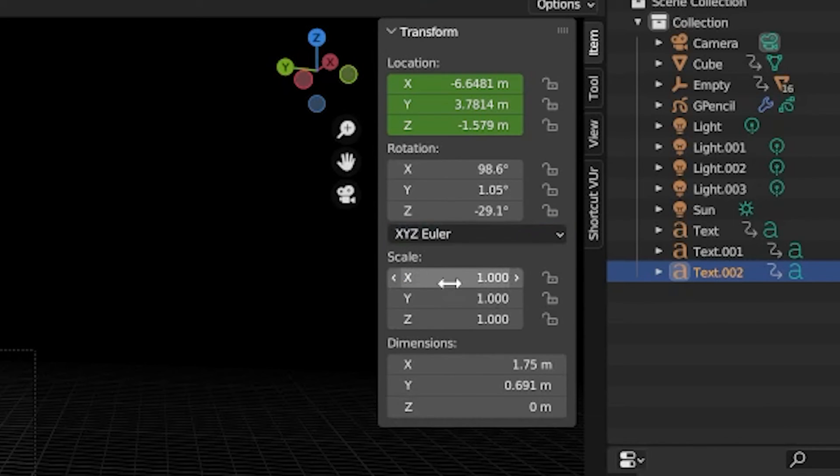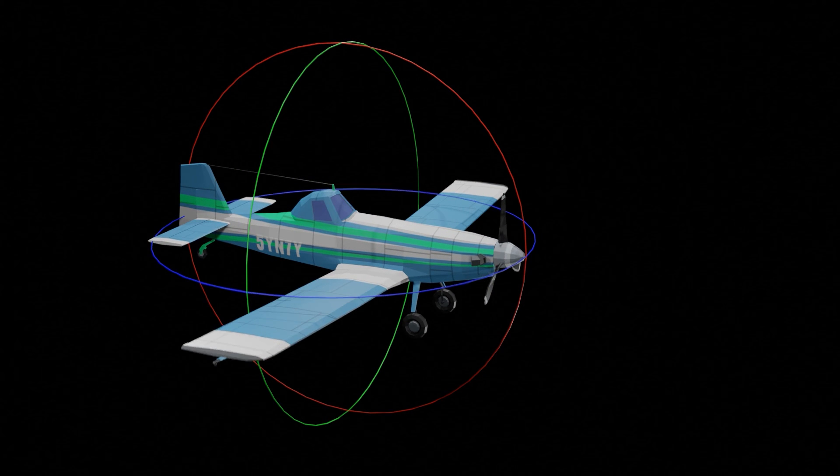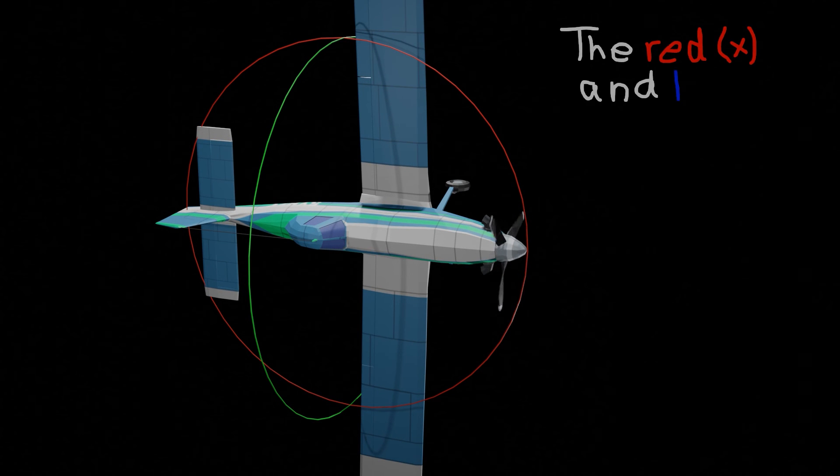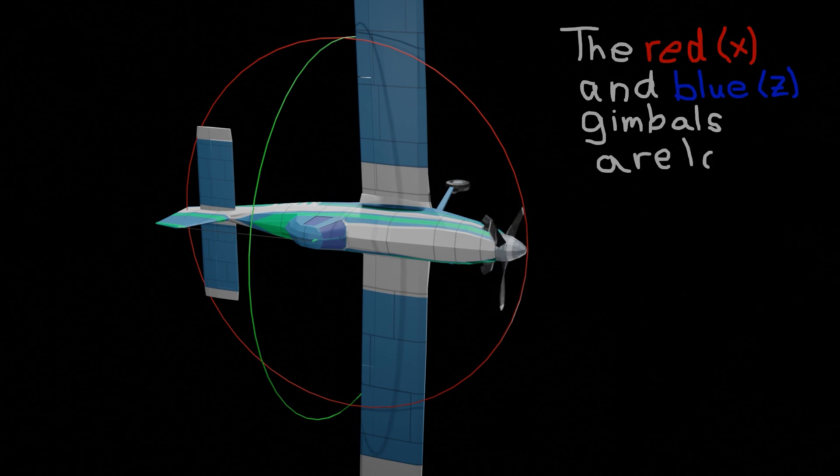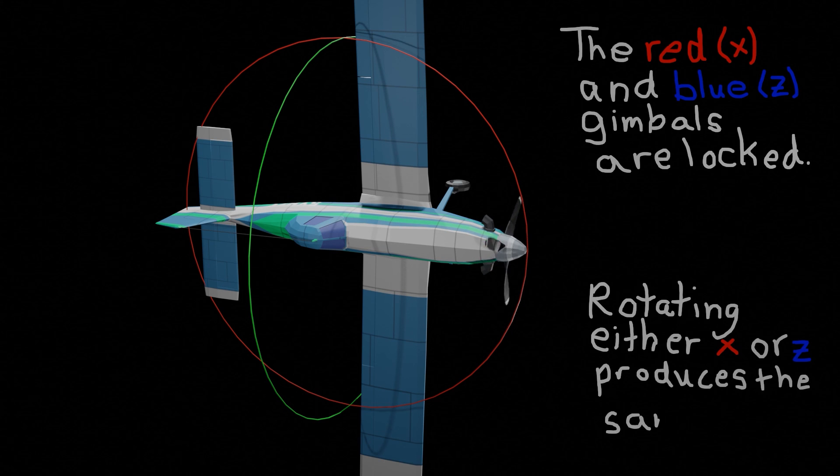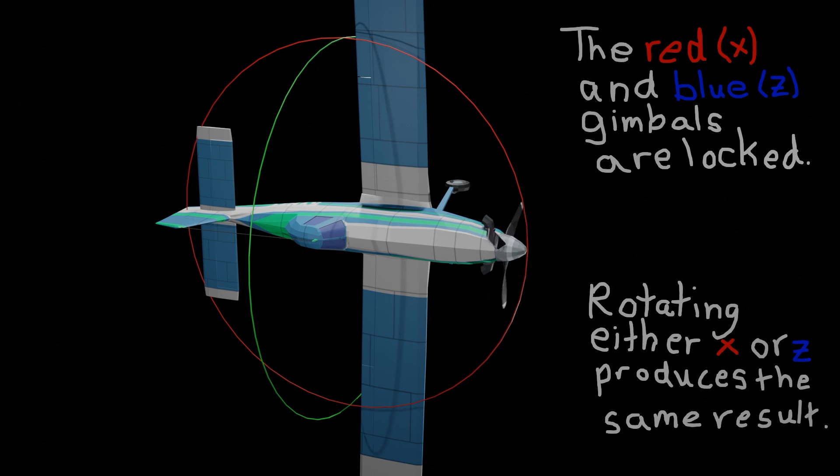But as we saw with the example at the beginning unless you're trying to do something pretty simple you can get into some weird situations with these. One major problem with them is that they are prone to something called gimbal lock. And gimbal lock is where two of your rotational axes will temporarily line up and you lose a degree of freedom until you're able to rotate out of that configuration. For the early space program you could see how that could be a problem.